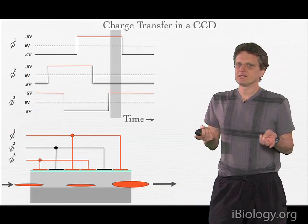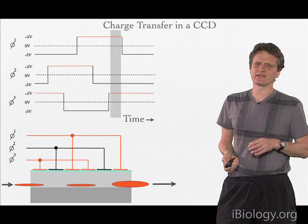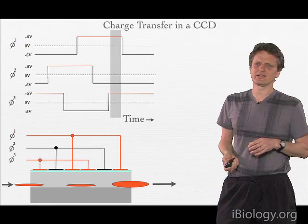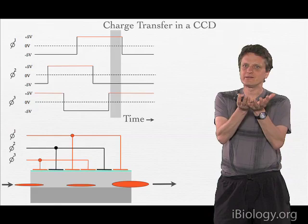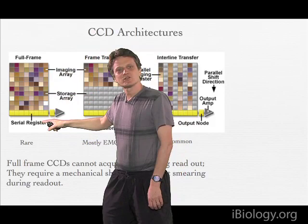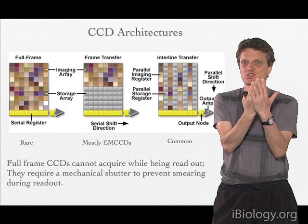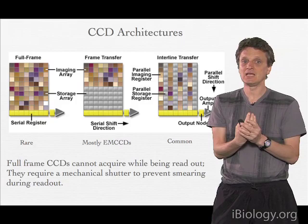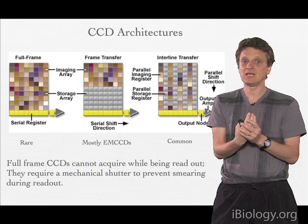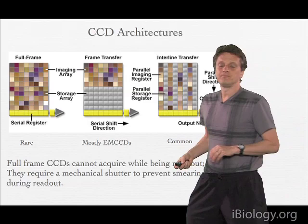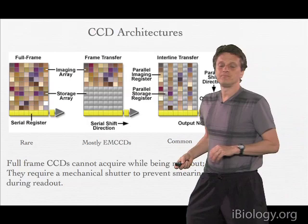There is one important issue: I said that at a certain point the photons stopped coming, but in reality that is of course not the case. We must use some kind of trick to stop light from reaching the photosensor, and that problem is the basis of different CCD architectures. The chip I described is a full-frame chip. In that case, when you start reading out you have to put a shutter in front of the chip so no more light reaches it. That's not ideal because shutters are bulky, cause movement, and are slow.